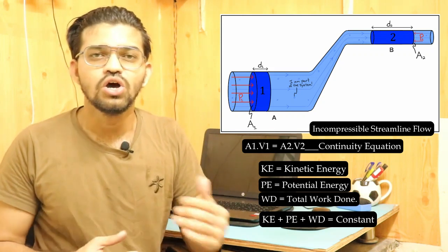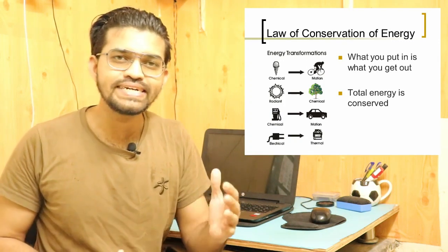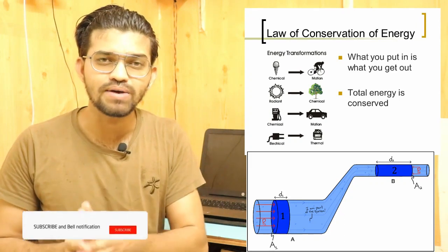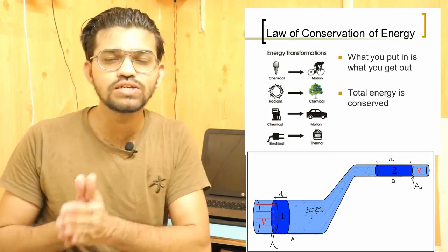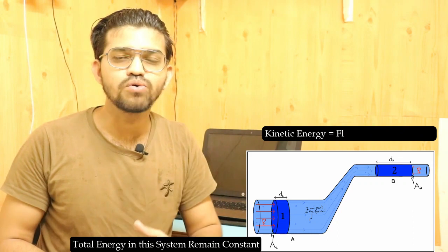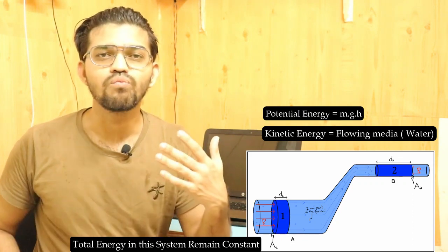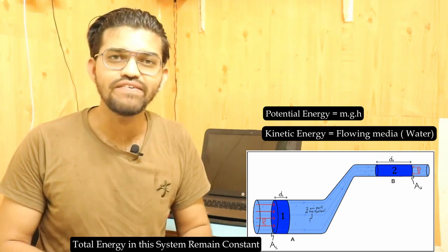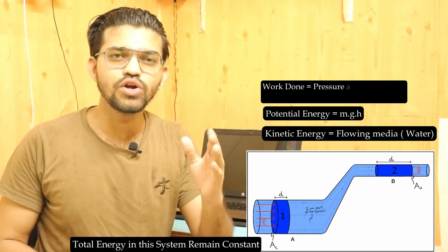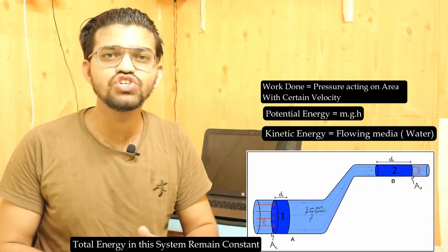We can prove this using the law of conservation of energy, which states that the total energy in the universe remains constant. Similarly, in this system of liquid flowing through a pipe, the total energy remains constant. The energy of the flowing fluid includes: kinetic energy — possessed by the water when it is in motion with a certain velocity; potential energy — when the water is at rest, accounting for acceleration due to gravity; and work done — since the fluid has certain velocity and pressure.